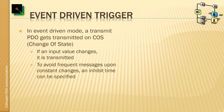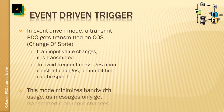To avoid frequent repetition of messages, there's an inhibit time. So if data changes continuously all the time, we introduce the inhibit time to delay transmission.